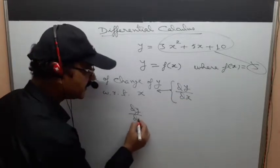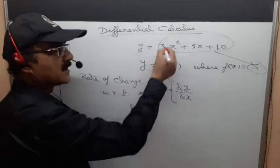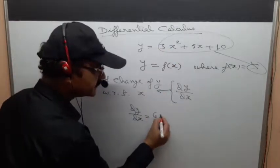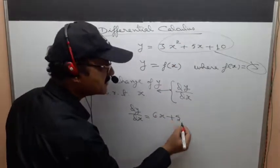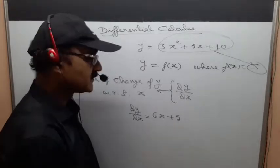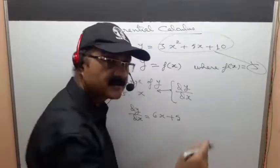For example, if y = 3x² + 5x, then dy by dx equals 6x plus 5. Now it must have come to your mind how this works.